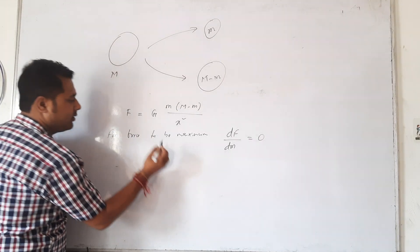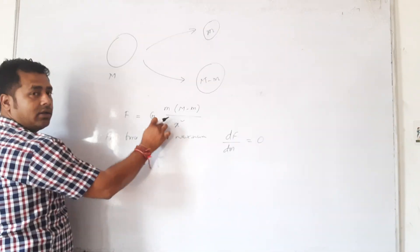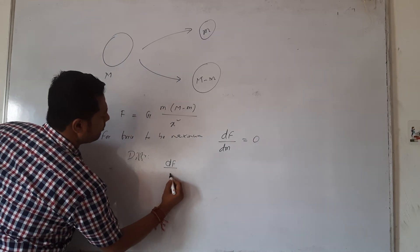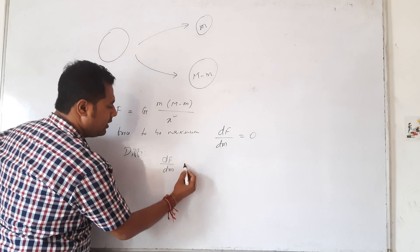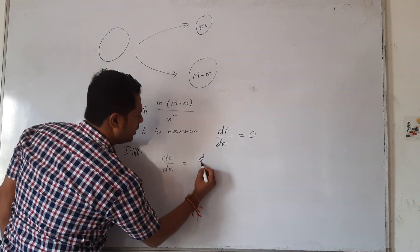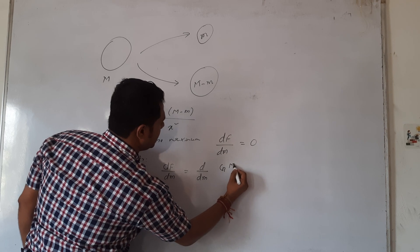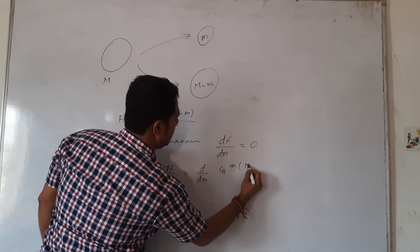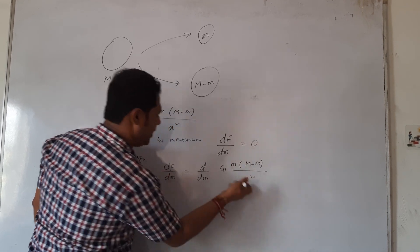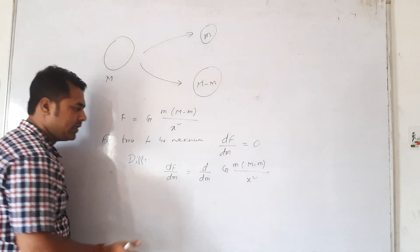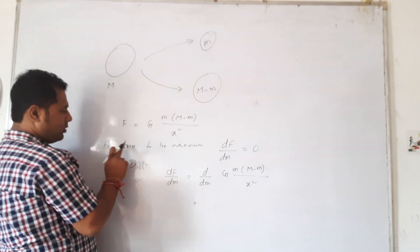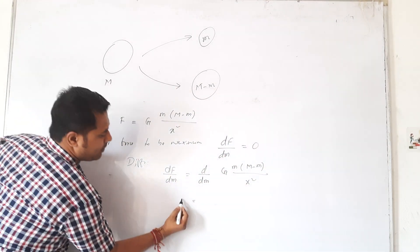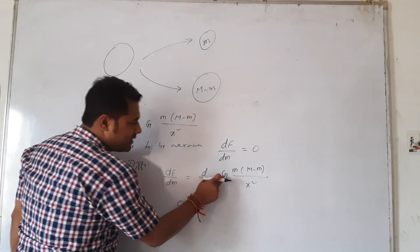Therefore, differentiating: dF/dm equals zero. We differentiate with respect to m. So d/dm of G times m times (M minus m) divided by x squared equals zero. Since G and x squared are constants, we differentiate d/dm of m times (M minus m) equals zero, which gives d/dm of (Mm minus m squared) equals zero.